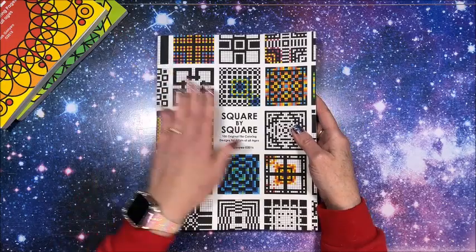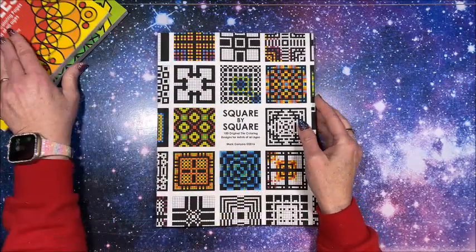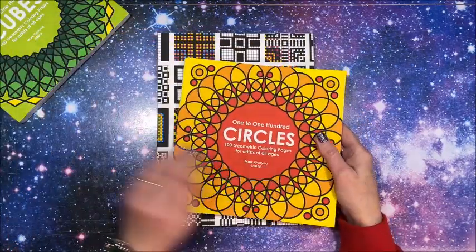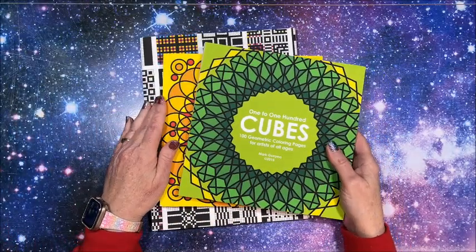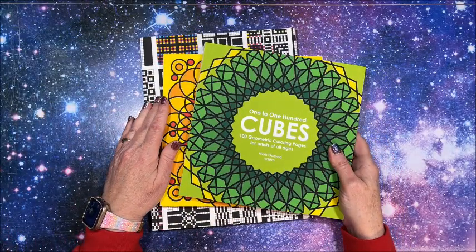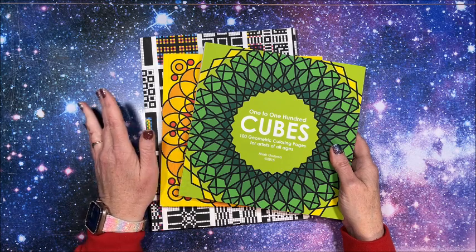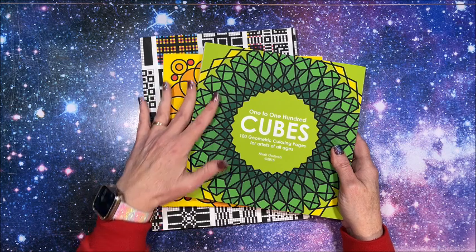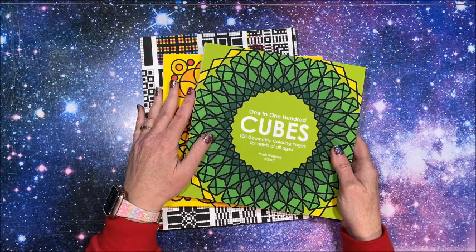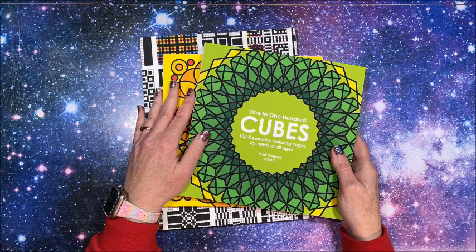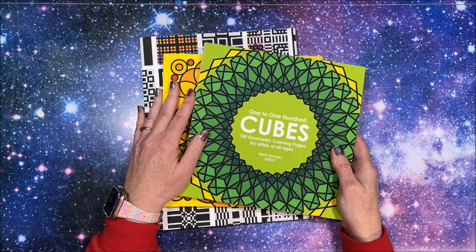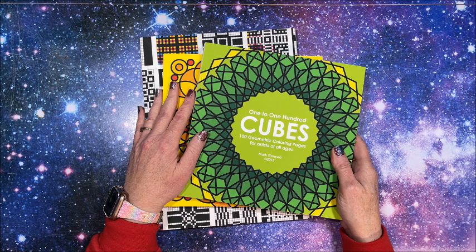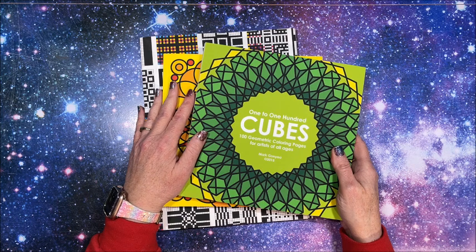Lots of fun. So again, that one is Square by Square, we have One to 100 Circles and One to 100 Cubes. Thank you so much for watching this video. I really do appreciate it. If you enjoyed seeing these three unique books, please hit that thumbs up button. Subscribe if you're new to my channel. I hope everybody's having a fantastic day, and as always, happy coloring. Bye guys!